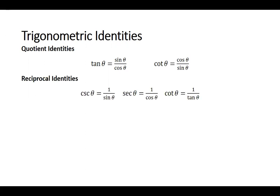The reciprocal identities — these we already know. Cosecant theta is equal to 1 over sine theta, secant theta is equal to 1 over cosine theta, and cotangent theta is equal to 1 over tangent theta.